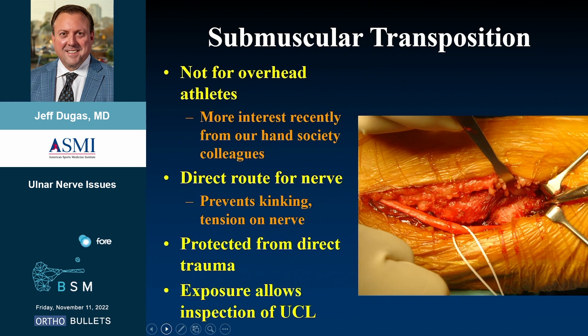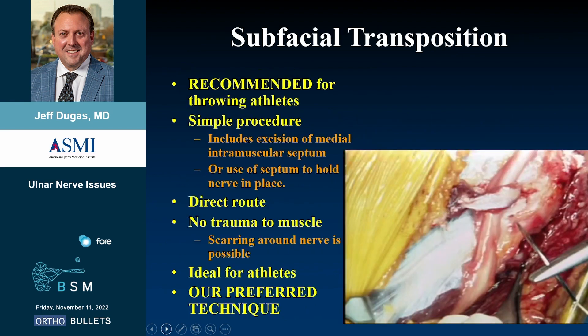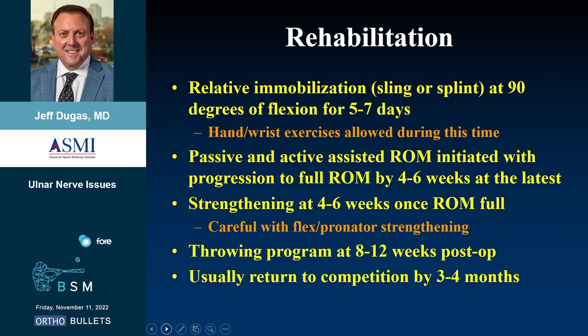Submuscular transposition is not recommended for overhead athletes, though hand surgery colleagues are moving toward submuscular and intramuscular transposition, citing a more direct route with less kinking and muscle protection. Subfascial transposition — using a sling of the intermuscular septum or fascia from the flexor pronator mass — is the preferred technique for throwing athletes. It creates a direct route with no real trauma to the muscle and is used whether or not concurrent UCL surgery is performed.